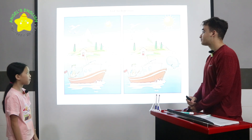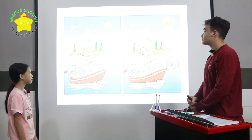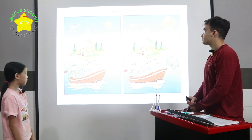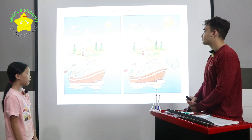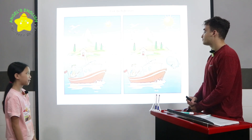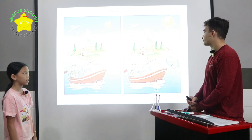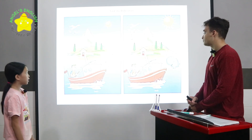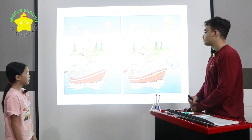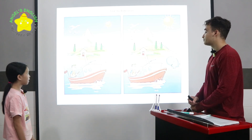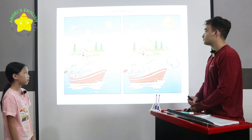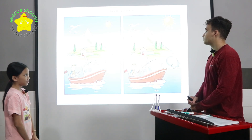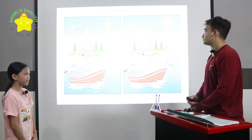In picture one, the sun is small. But in picture two, the sun is big. In picture one, the window of the boat is a circle. But in picture two, the window of the boat is a rectangle. In picture one, there are three eagles. But in picture two, there are five eagles.